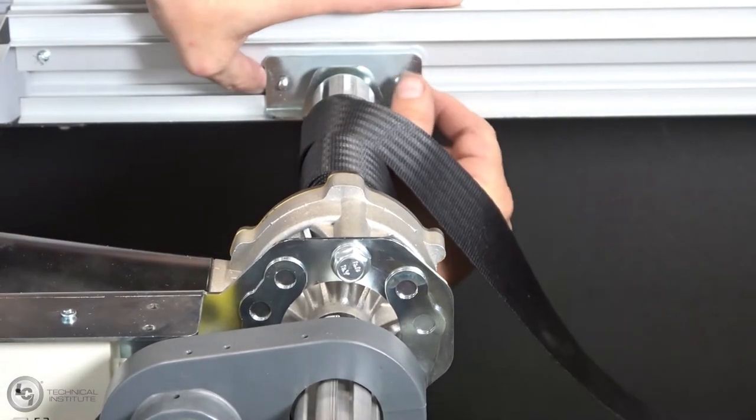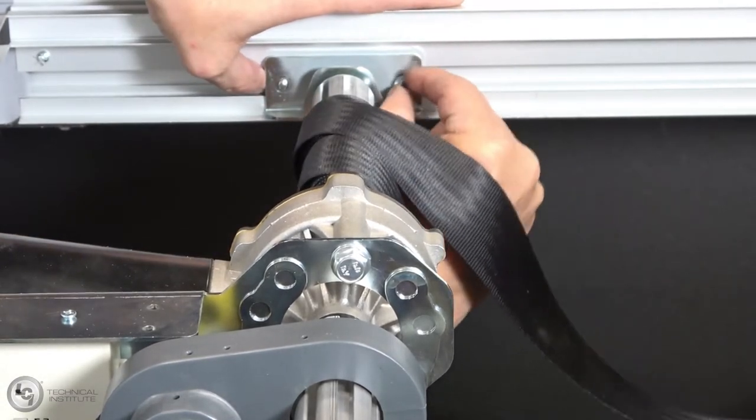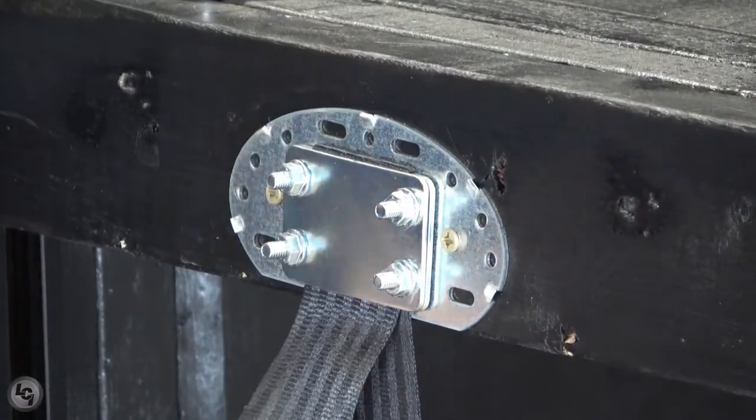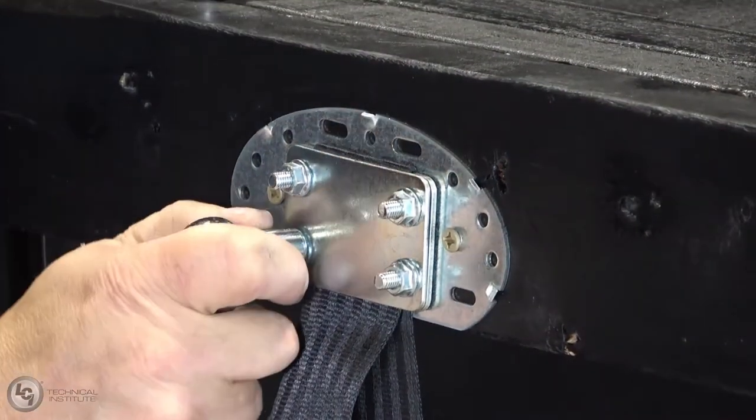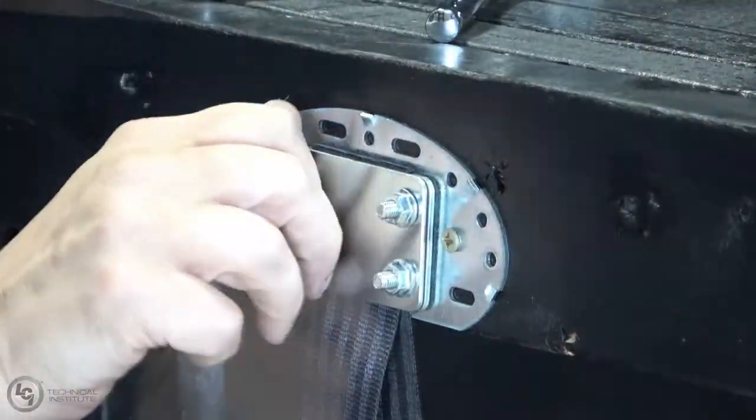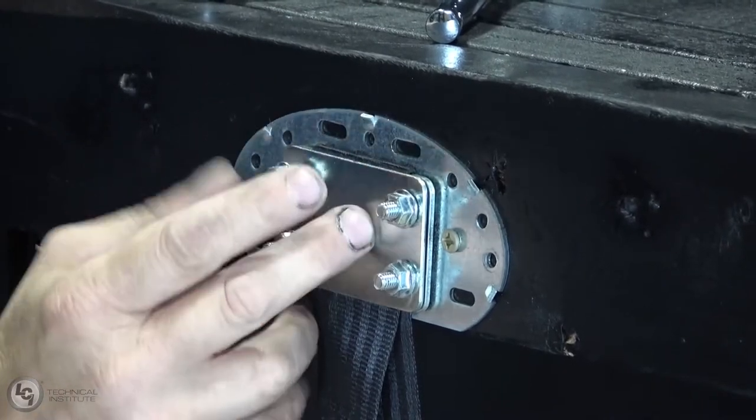Now you will want to move to the belt bracket for the belt you wish to replace. Remove the external cover to expose the four nuts securing the two plates in place that hold the belt. Loosen the four nuts to allow the plates and belt to become slack, and then remove the belt end from the bracket.